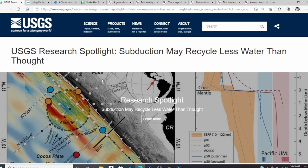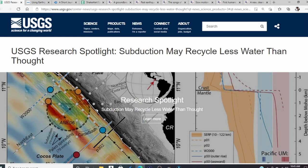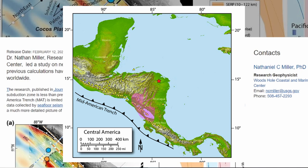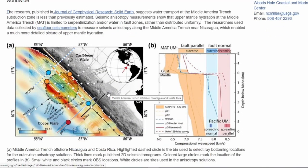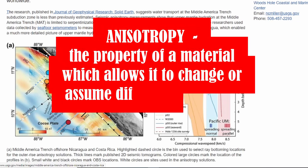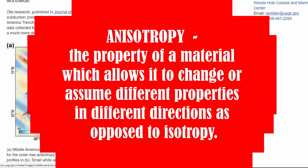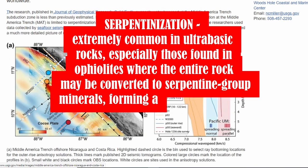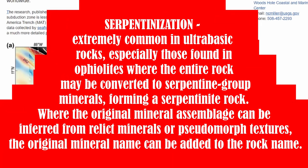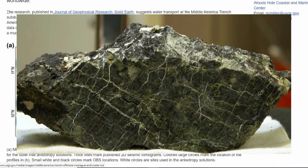The next article is a USGS research spotlight: Subduction may recycle less water than thought. Dr. Nathan Miller, research geophysicist from the USGS Woods Hole Coastal and Marine Science Center, led a study with new analysis of seismic data from the Middle American Trench, suggesting that previous calculations have vastly overestimated the total amount of water transported to the mantle worldwide. Seismic anisotropy measurements show that upper mantle hydration at the Middle America Trench is limited to serpentinization or water in fault zones rather than distributed uniformly. The researchers used data collected by seafloor seismometers to measure seismic anisotropy along the Middle America Trench near Nicaragua, enabling a much more detailed picture of upper mantle hydration.